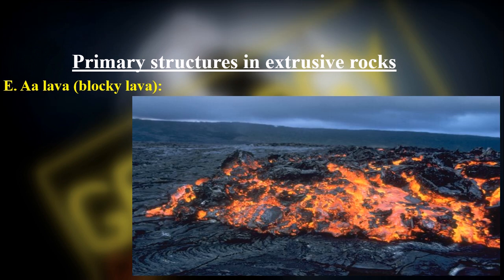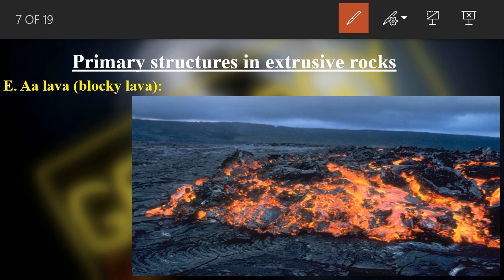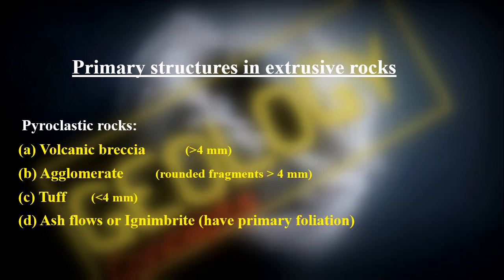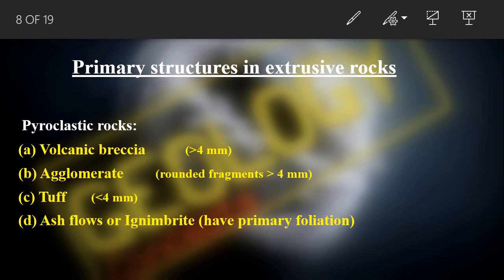In contrast, blocky lava is very viscous. As soon as it comes to the surface, the outer part cools quickly; since it's highly viscous it doesn't move and forms blocks. The hot molten interior rips apart these formed blocks, giving the structure seen in the figure. This type of structure is called aa lava.